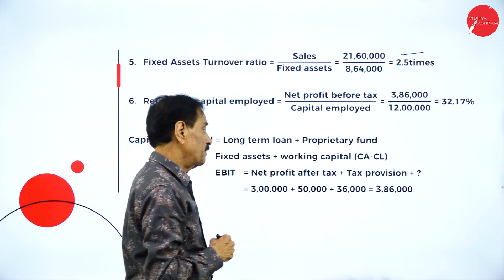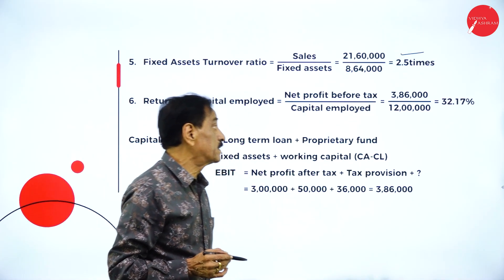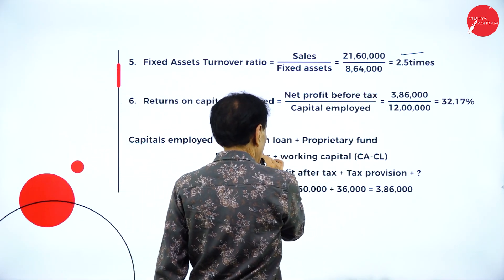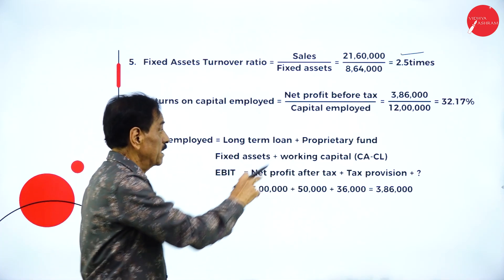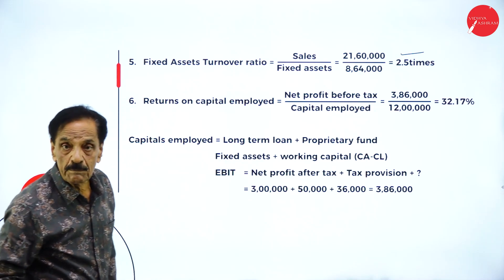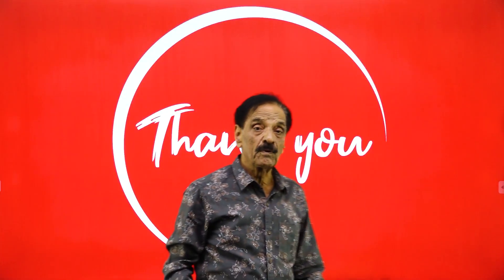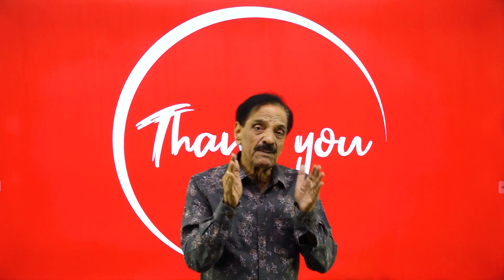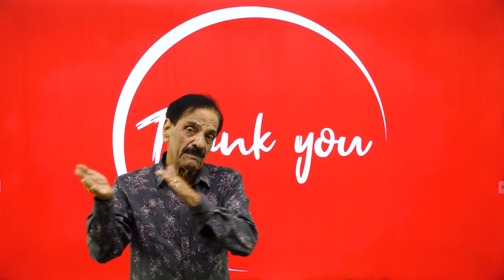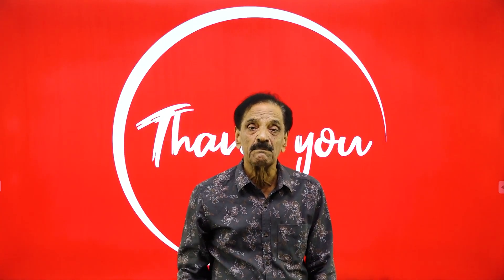Capital employed is long-term loan plus proprietary fund, or equivalently fixed assets plus working capital. Net profit after tax plus tax provision of 3 lakh 50,000 plus 36,000 gives 3 lakh 86,000. You must learn the formulas correctly so they are easy to apply. Ratios help in comparison of last year with the current year. We will meet in the next session with cash flow statement — till then, goodbye.